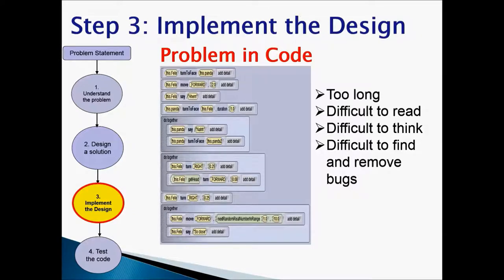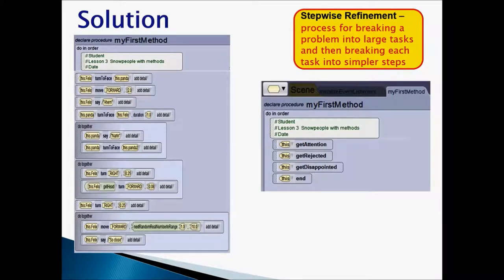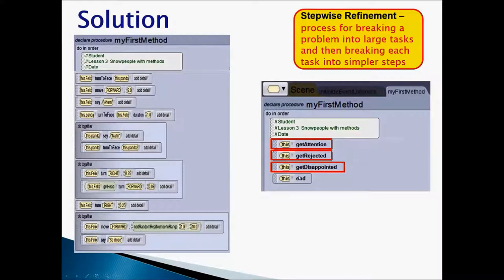So we're going to take that problem and create a solution for it. The solution is going to be a stepwise refinement. As learned in a previous lesson, stepwise refinement is breaking a problem into large tasks and then breaking those into simpler tasks. We're going to break this problem into four main tasks: Get Attention, Get Rejected, Get Disappointed, and End — which is optional. If your story has an end, we'll include it; otherwise the end procedure is optional.